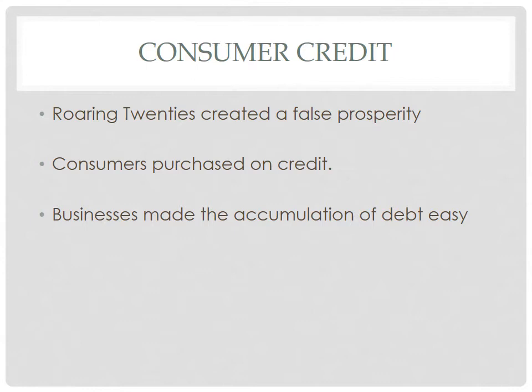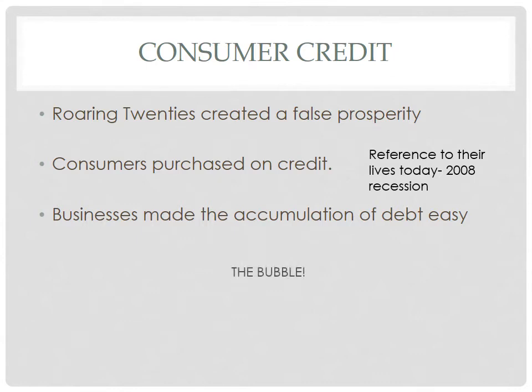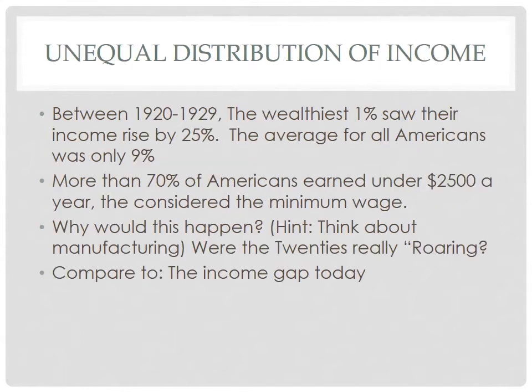Eventually, all these expensive products and this way of living made it really easy for individual debt to build up. Individual debt is simply the debt a consumer has due to their purchases. We saw a lot of this in the recession about five years ago — people trying to buy homes with payments that were too much for them. This is all adding to that bubble.